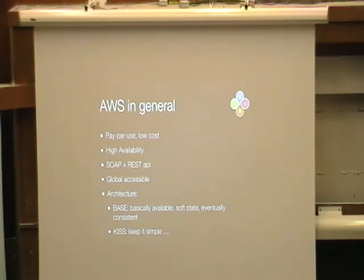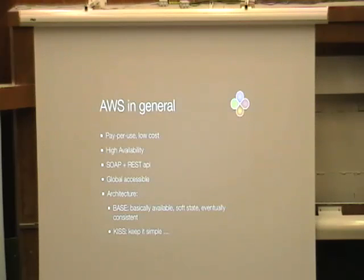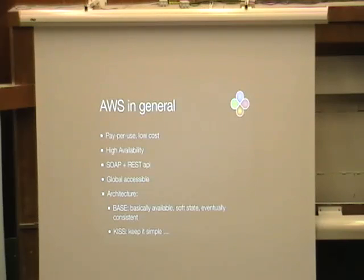I was at a QCon conference about three years ago and heard a speech from Werner Vogels, the CTO of Amazon. He explained a lot about the architecture behind the infrastructure — it was a pretty complex story. Very important is that they don't use real transactions in the ACID form, because the theory is they don't scale to Amazon scale. There's a theory called the CAP theorem. CAP stands for consistency, availability, and partitioning.